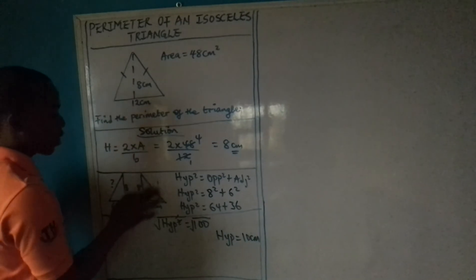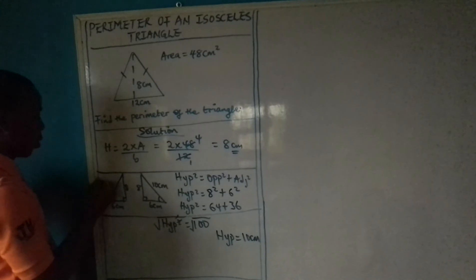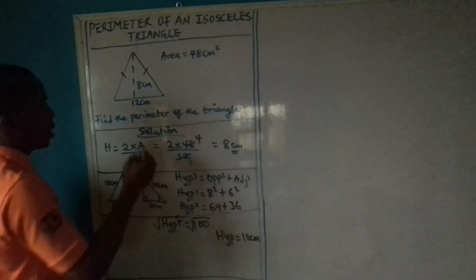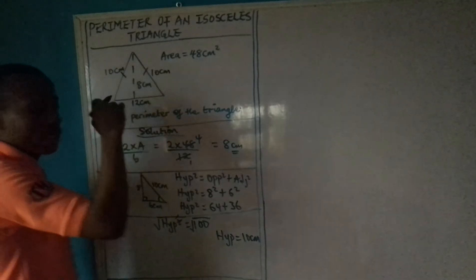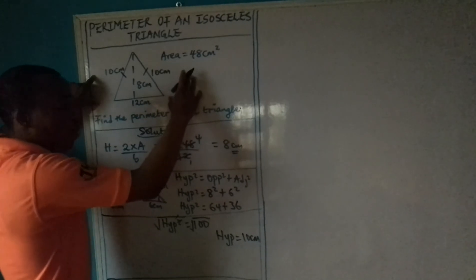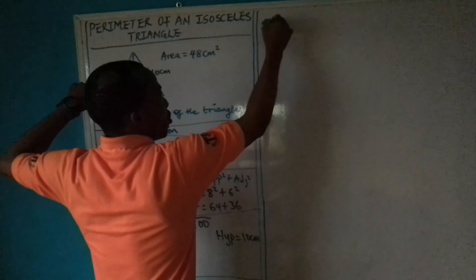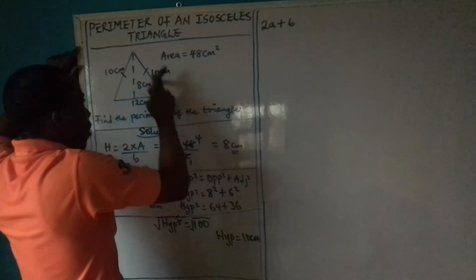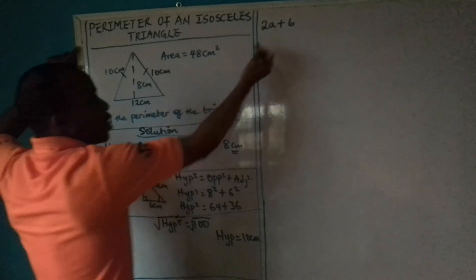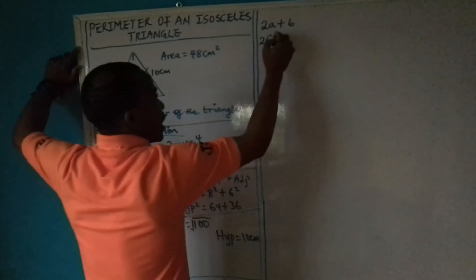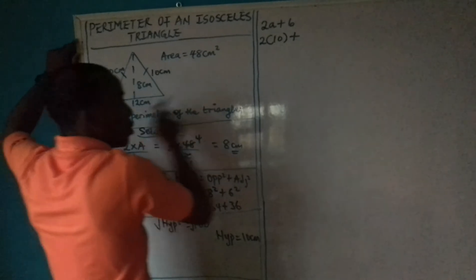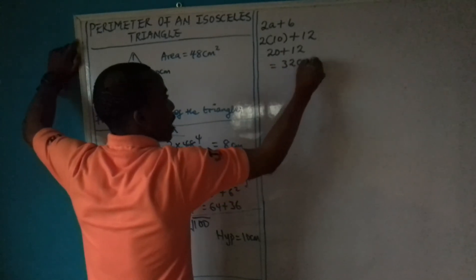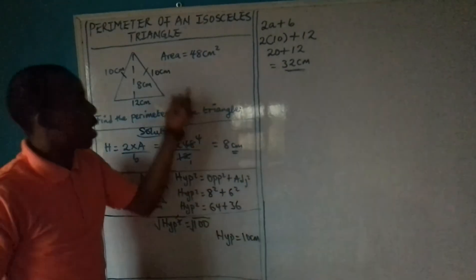This means we have worked out one of the equal sides as 10 centimeters. Since we worked out one side, it is equal to the other side, so both equal sides are 10 centimeters each. Now we can calculate the perimeter. The formula is 2a plus b, where a is one of the equal sides and b is the base. That is 2 times 10 plus 12, which gives us 20 plus 12, equaling 32 centimeters. The perimeter of this isosceles triangle is 32 centimeters.